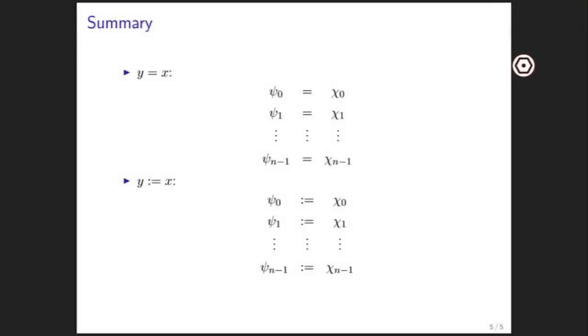So here we summarize. We have y equal to x, which checks equality. Two vectors are only equal if the components are equal. And we have assignment of one vector to another, y becomes x, which means that components of x must be assigned to the corresponding components of y.